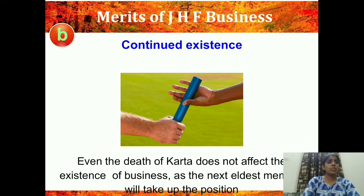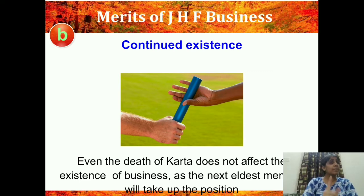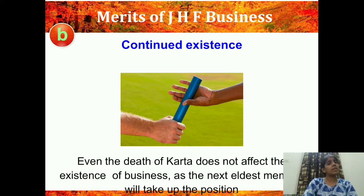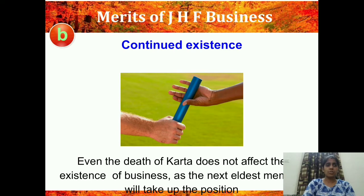The second merit is continued existence. Even the death of the Kartha will not affect the business — the business will go on to the next eldest member's hand and he will become the Kartha. This was a demerit in sole proprietorship where the business discontinues upon death of the proprietor. But here it is a merit — if the Kartha or any other member dies, the business is not affected and the next eldest member becomes the Kartha.